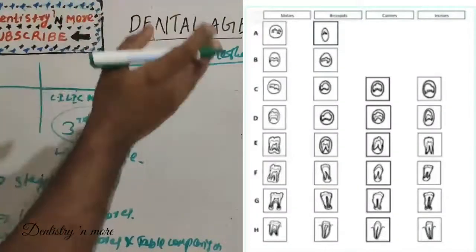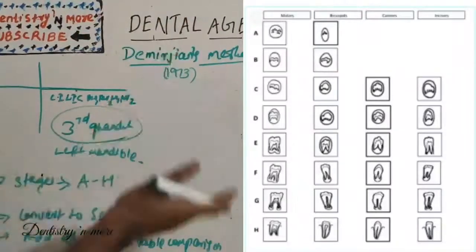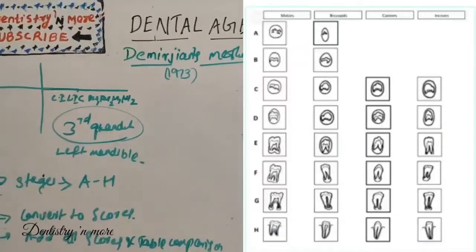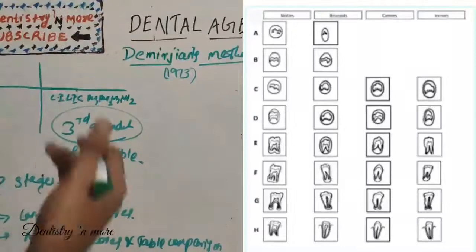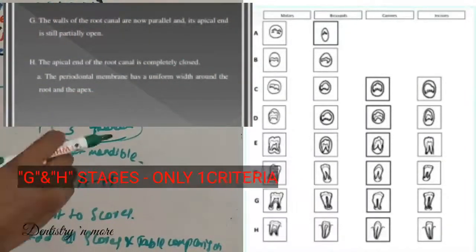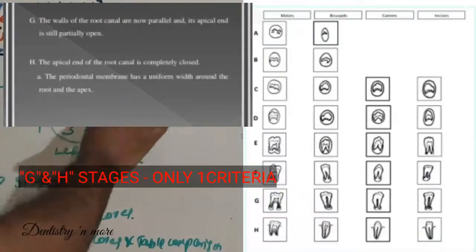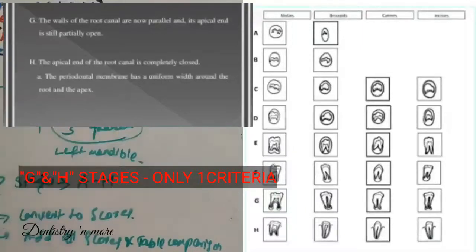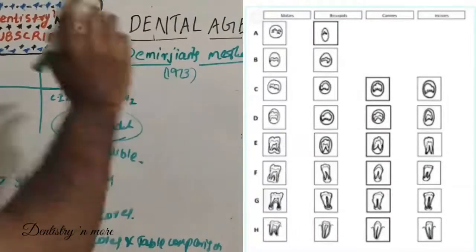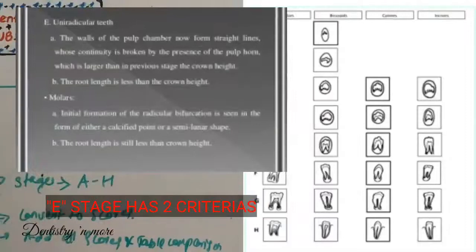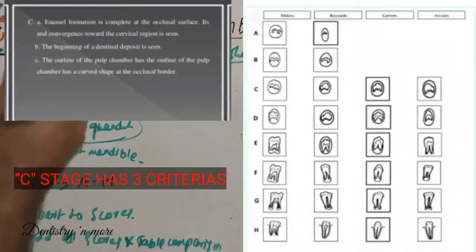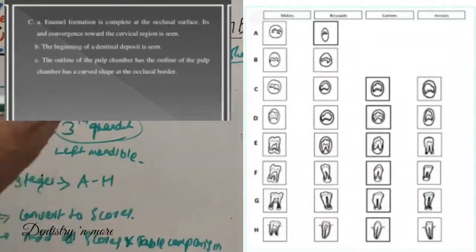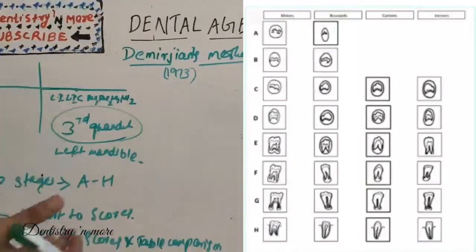Stage A is the beginning of calcification and tooth formation; stage H is the completion. For every stage we may have one, two, or three criteria. If just one criterion exists for a particular stage, we need to fulfill that criterion to correlate our tooth to that stage. If there are two criteria, it is sufficient if the first one is met. If three criteria exist, we need to match the first two. Also, the criteria for the previous stage must be satisfied, and in borderline cases we go with the earliest stage.